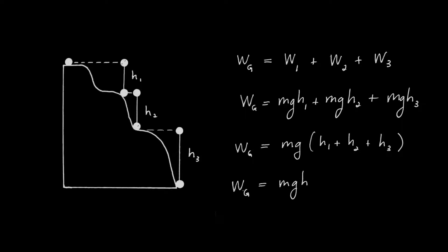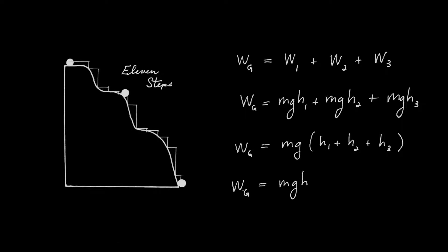You might object that this isn't the actual path — it looks like Lego bricks, not smooth motion. But here's the remedy: I'll do it in much smaller steps. Instead of three big steps, I'll go over a little and down a little, over a little and down a little, repeating over and over — 11 steps, 100 steps, as many as needed. Every time I make the steps smaller, the approximation gets better and better.